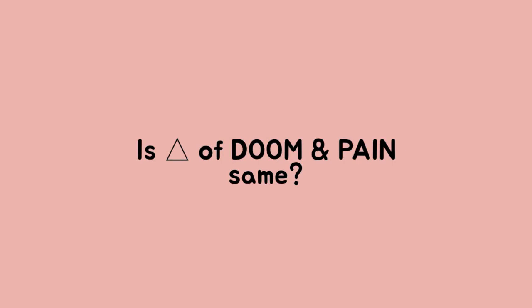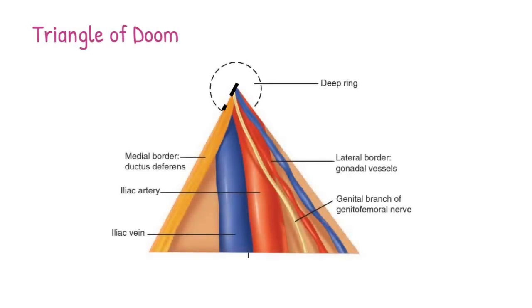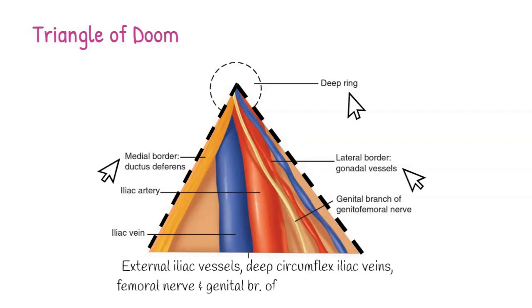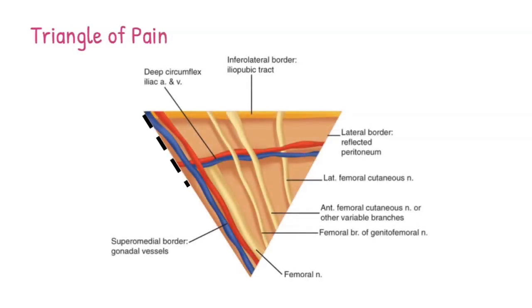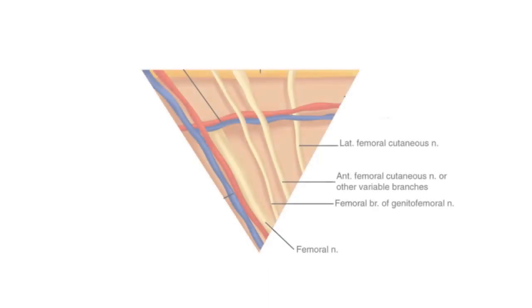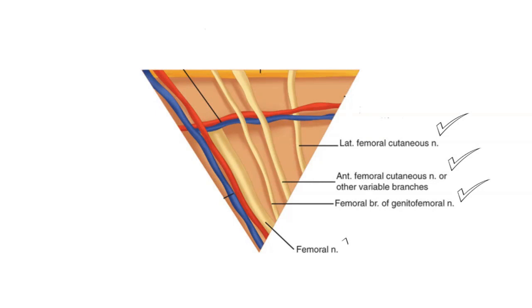What do you think about the triangle of doom and the triangle of pain — are they both the same? The triangle of doom is bounded medially by vas deferens, laterally by gonadal vessels, and the apex is oriented at the internal ring. While the triangle of pain has a superomedial border by gonadal vessels, an inferolateral border by the iliopubic tract, and a lateral border by the reflected peritoneum. It is a misnomer coined by surgeons and contains the lateral femoral cutaneous nerve, anterior femoral cutaneous nerve, femoral branch of genitofemoral nerve, and femoral nerve, from lateral to medial.